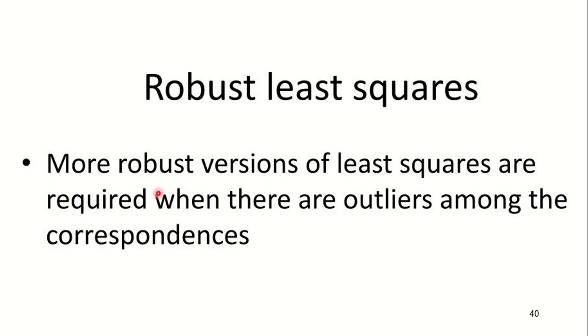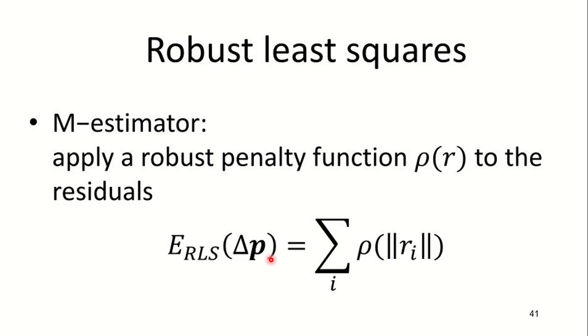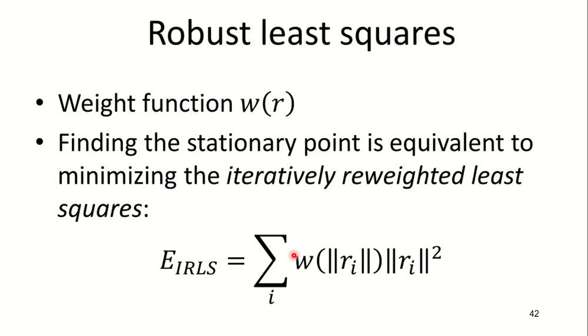In robust least squares method, most robust versions of least squares are required when there are outliers among the correspondences. In M-estimator, we apply a robust penalty function ρ(r) for all the residuals, and weight function w(r) which will be finding the stationary point which is equivalent to minimizing the iteratively reweighted least squares. E_IRLS equation is given.